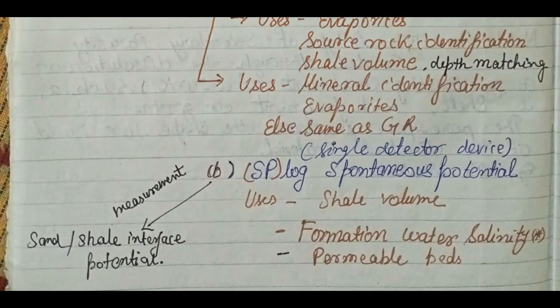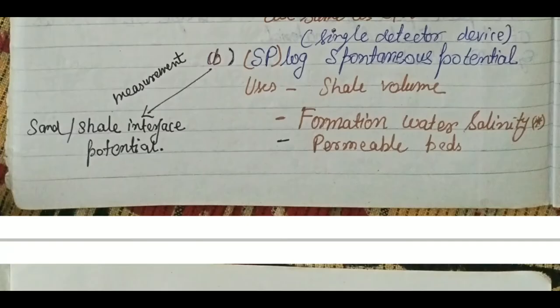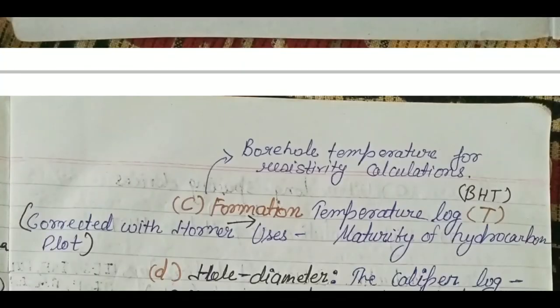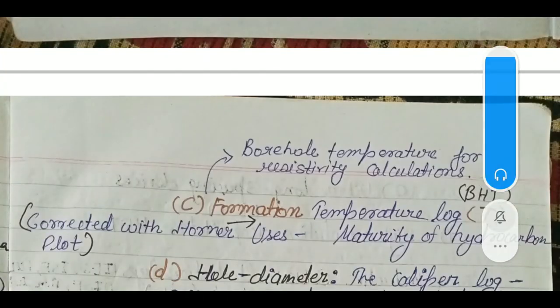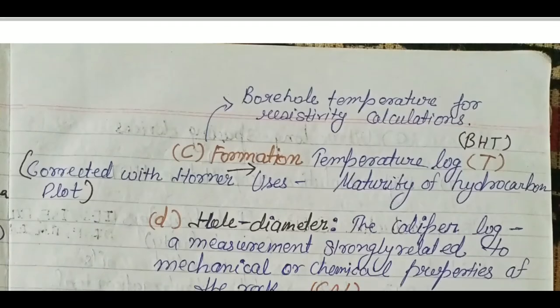The third is the borehole temperature log, in which we use the Horner plot. One of the important uses of the temperature log is in resistivity calculation — what we measure at one temperature can be corrected to another temperature using the temperature log.